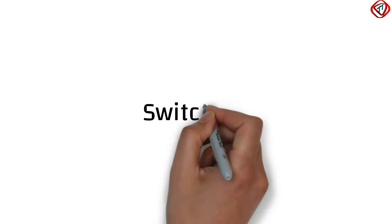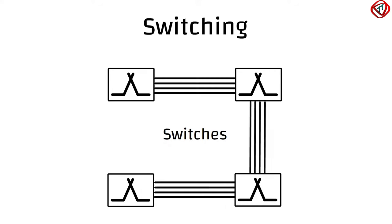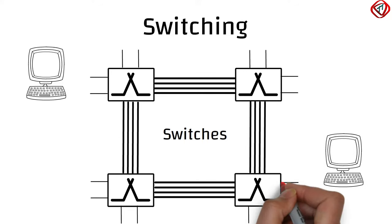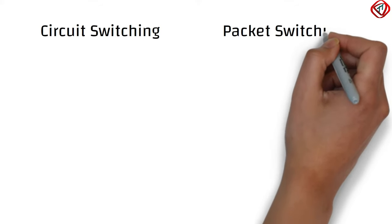A solution to this problem is switching, where devices called switches interlinked to each other are used to set up temporary point-to-point connections among the end systems. End systems connect directly to the switches. In a network, there are two fundamental approaches to transfer data from one device to another: circuit switching and packet switching.